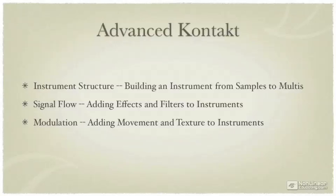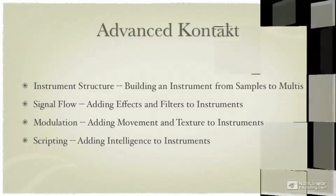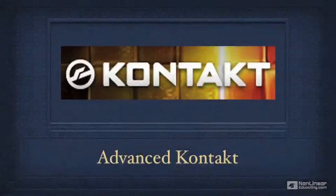And lastly, we'll touch on scripting. The scripts in Kontakt allow you to do very complex things — actually make your instruments intelligent. Things like a round robin, which will play a different sample every time you hit a key to avoid the dreaded machine gun effect, or automatic harmonization of the notes that you play. We won't talk about how to build the scripts, because that's a whole programming course. We will, however, talk about how to use the scripts that come with Kontakt and that are available on the web to make your own instruments take advantage of all of this intelligence. As you can see, there's an awful lot to cover in this course. We're going to get on with the show right now by starting with a high-level overview of the instrument structure.